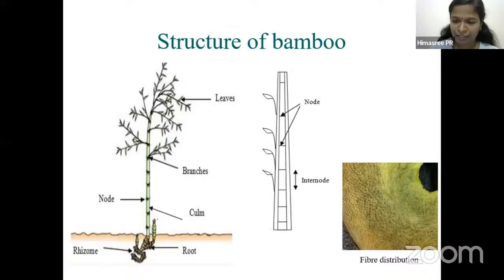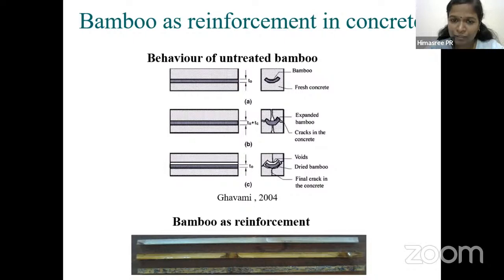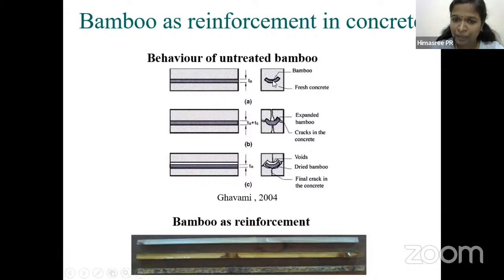The transverse fiber arrangement at the node leads to brittle failure when subjected to tensile force. When using bamboo as a natural material in concrete, we need to consider water absorption, fire resistance, and insect resistance. If untreated bamboo is placed in fresh concrete, it will absorb water and swell, causing cracks to develop prior to loading. After some curing period, the bamboo loses the absorbed moisture and those cracks may close.